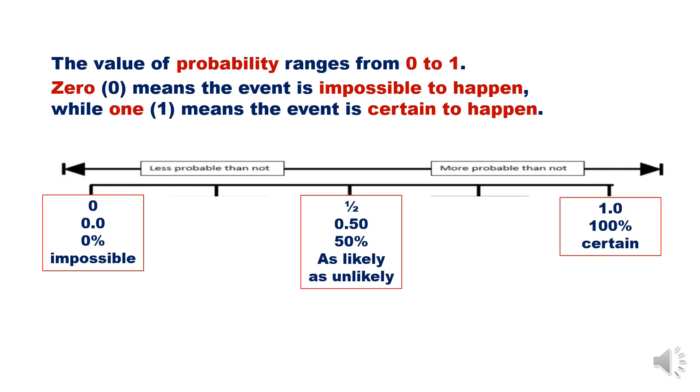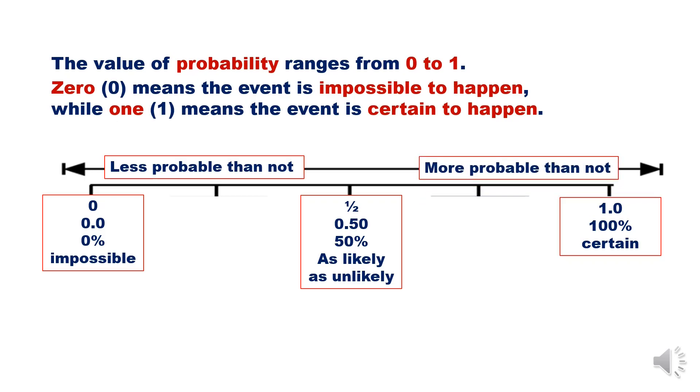Between 0 and 1, at one half, that is 50%, or as likely as unlikely. The left side of one half is less probable than not, while at the right, more probable than not. Between 0 and one half is one fourth, or 25%, or unlikely to happen. While between one half and 1, that is three fourths, or 75%, likely to happen.